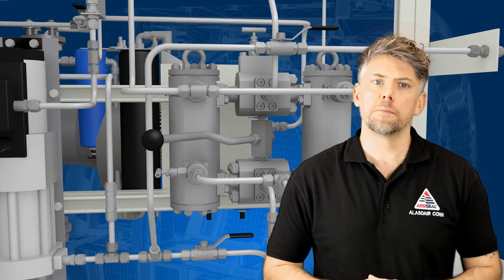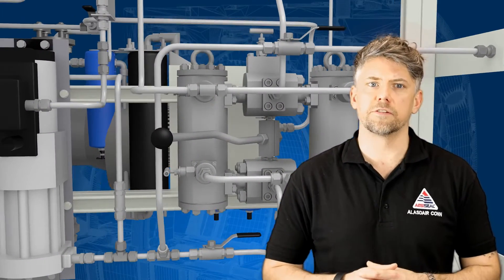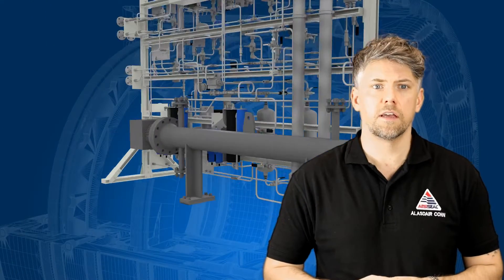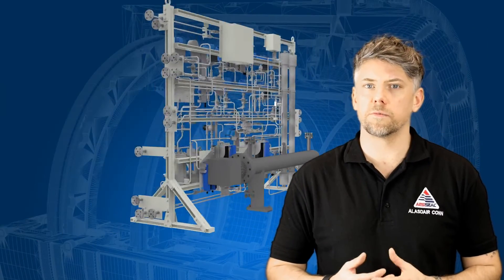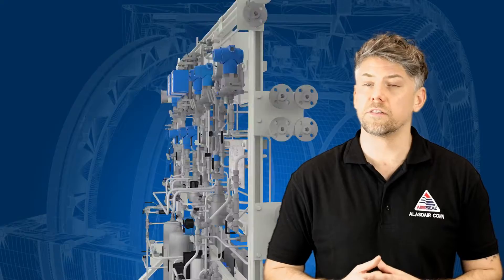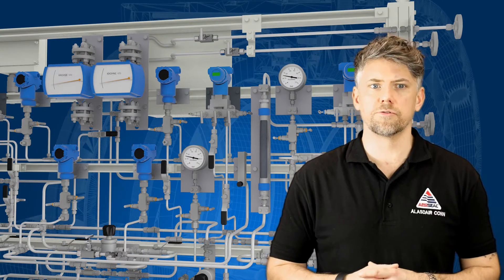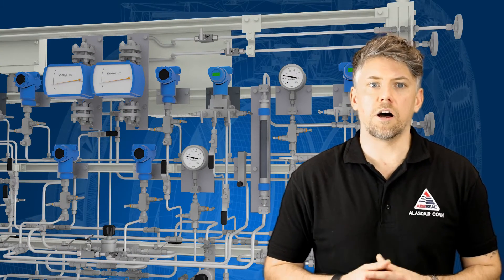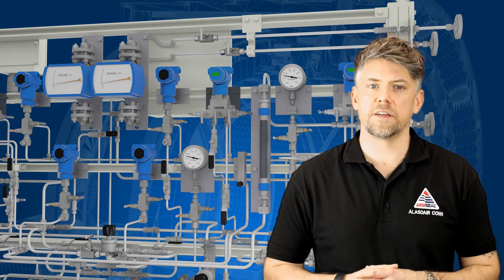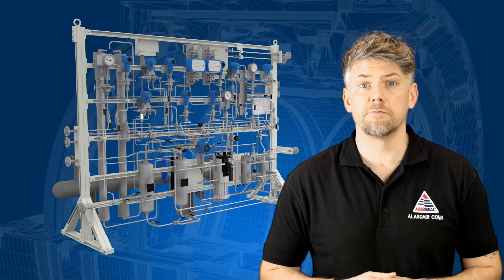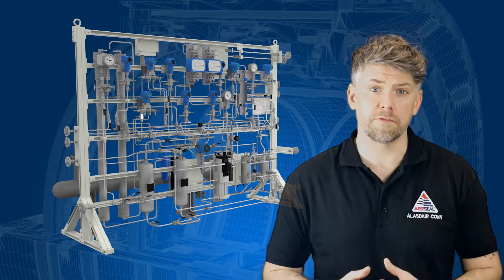Typical seal support systems consist of particulate filters to remove solids, coalescing filters to remove liquids, heaters to ensure gas is free from liquid and condensates, pressure and/or flow controls, and alarms to alert operators to adverse conditions, along with alternate seal gas sources if required.